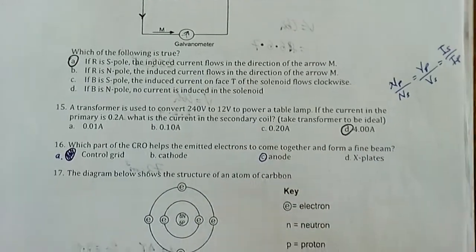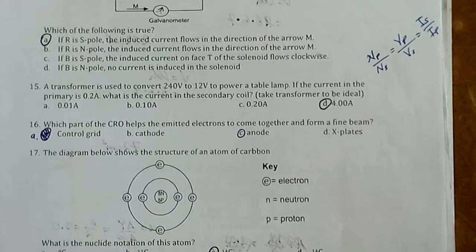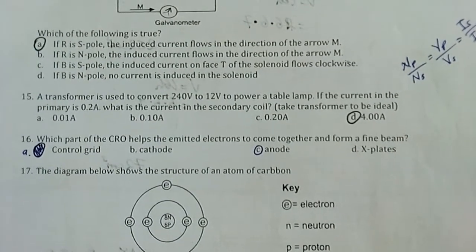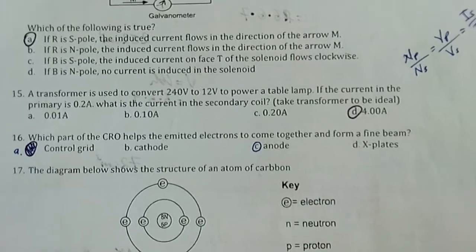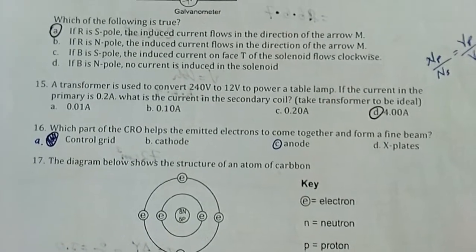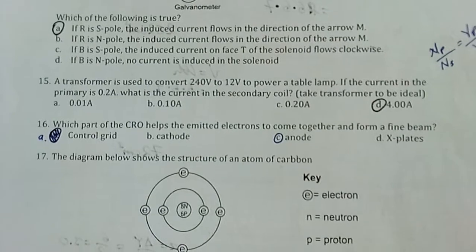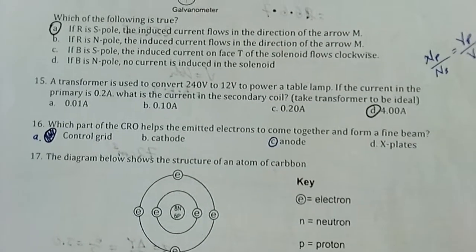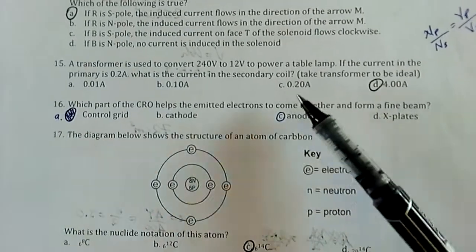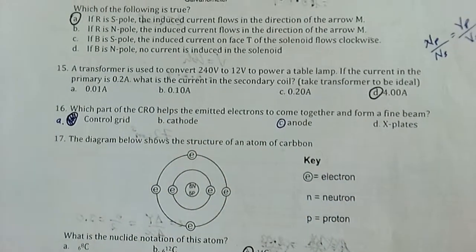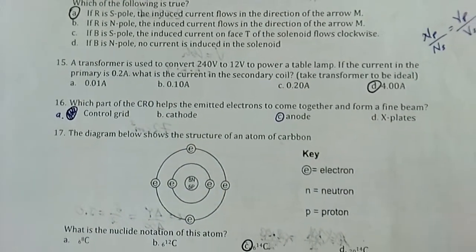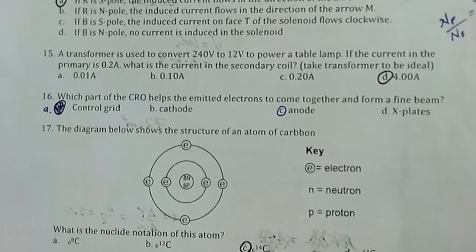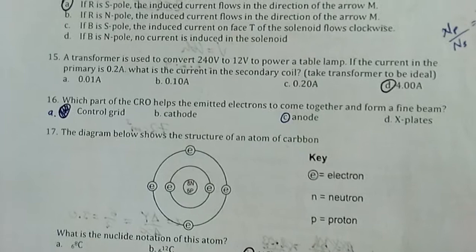Number 16: Which part of the CRO, the cathode ray oscilloscope, helps the emitted electrons come together and form a fine beam? Coming together and forming a fine beam is, in other words, focusing the electrons or cathode rays. My answer is the anode. The anode has two functions: to focus the cathode rays or electrons, and also to accelerate them.